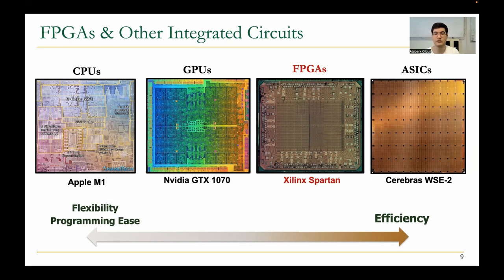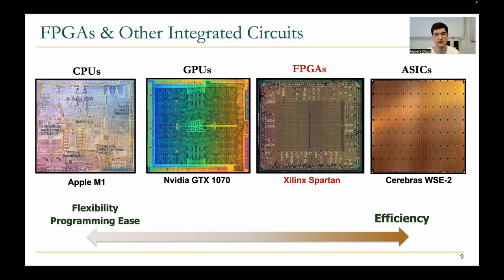As we move towards the processor on the scale, it gets easier to program and more flexible and general-purpose. As we move towards ASICs, it gets more efficient because the whole silicon is specialized for a single application. FPGAs are harder to program but more efficient than general-purpose chips, and easier to develop compared to application-specific integrated circuits — so they're trading off efficiency for versatility.